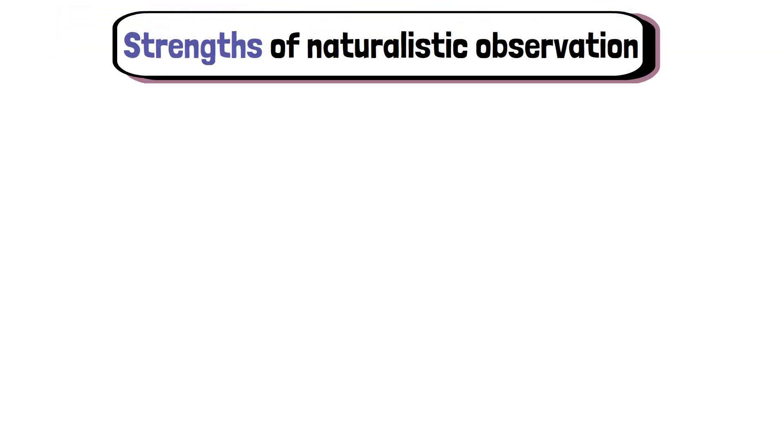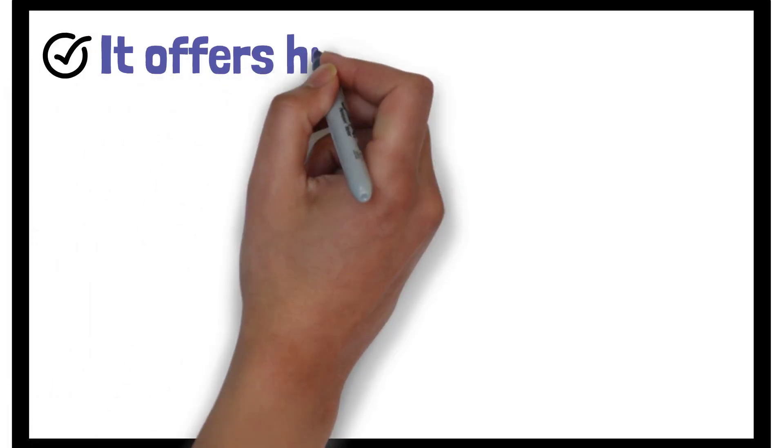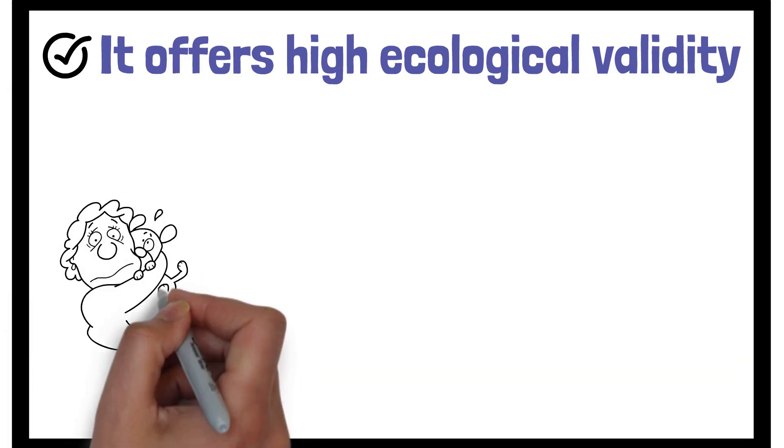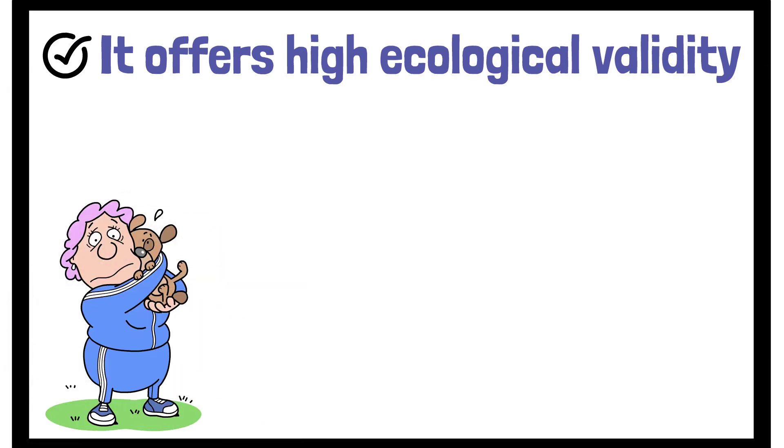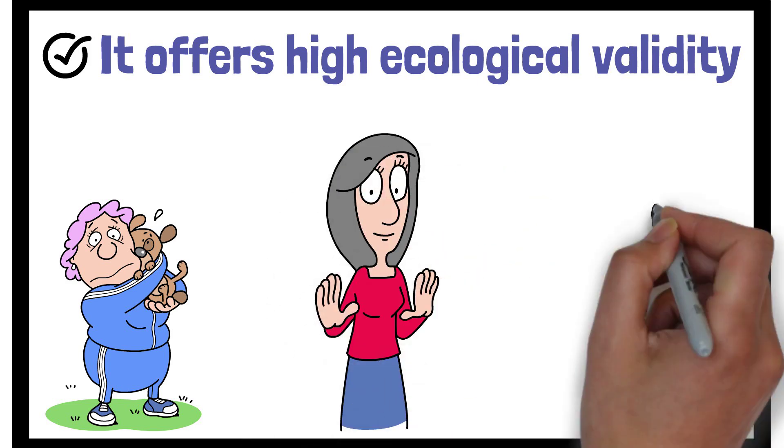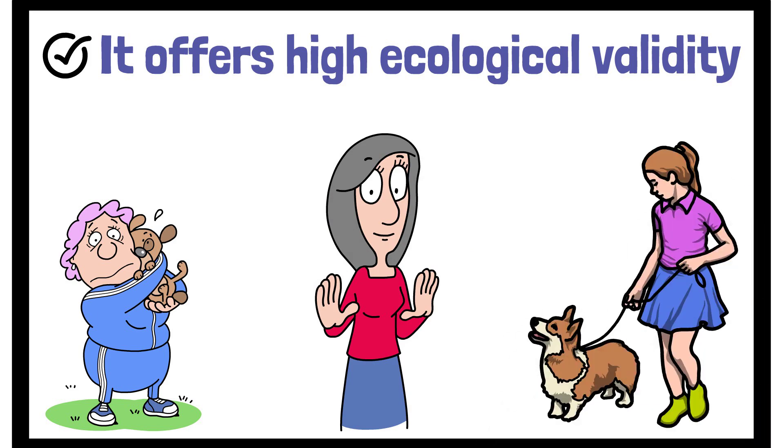Now let's look at some strengths of naturalistic observation. One strength is that it offers high ecological validity, meaning the behaviour observed is more likely to reflect how people or animals act in real life settings. This is because the researcher doesn't manipulate the environment, ensuring that the subjects behave as they normally would.